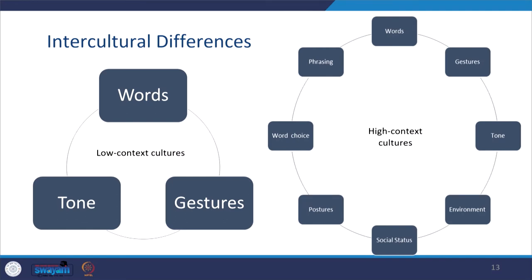Culture plays a very dominant role in communication. People of high context cultures find meaning in totality, whereas people of low context cultures only believe in words, tones, and gestures. People of high context culture make meaning out of word choice, phrasing, words, gestures, tone, environment, social status, and posture. People of Japan, for example, are a high context culture and give too much primacy to meaning based on all these factors, making cross-cultural communication very difficult.